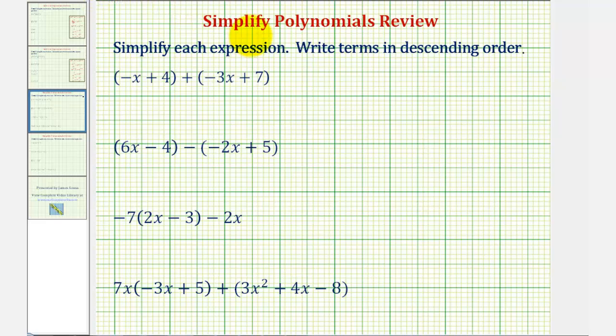We want to simplify each expression and write the terms in descending order. We first have the quantity negative x plus four, plus the quantity negative three x plus seven.